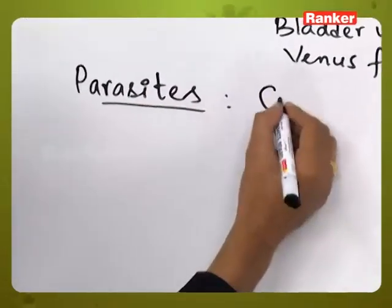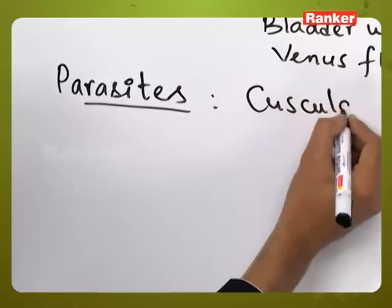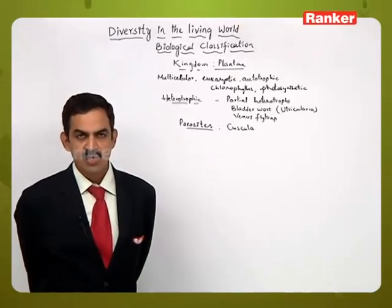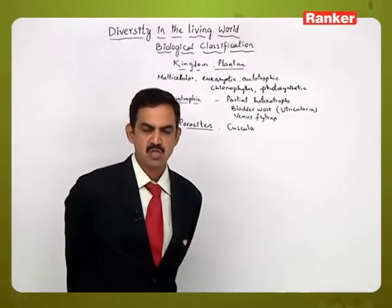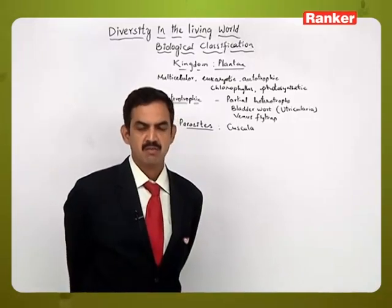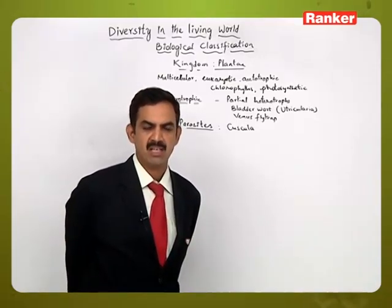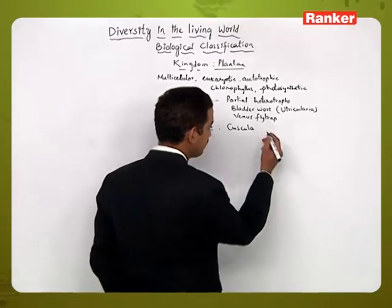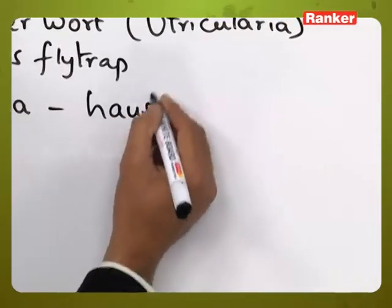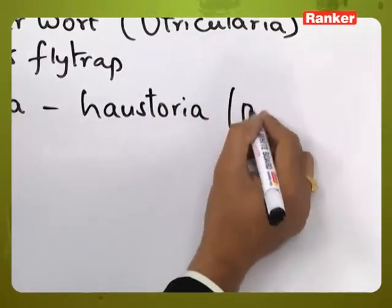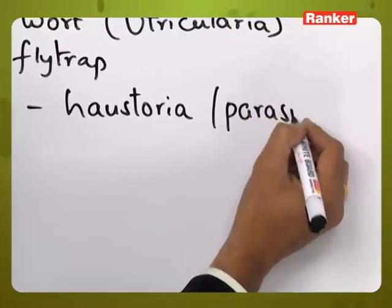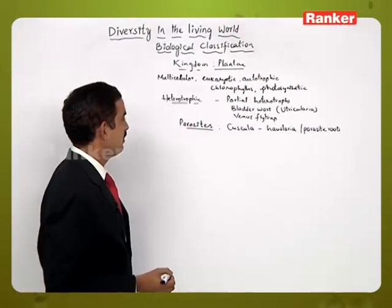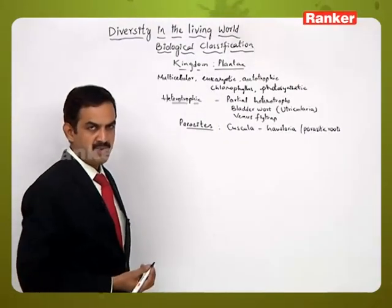There are some parasitic plants also, like Cuscuta. Cuscuta is an angiospermic plant which depends upon other angiospermic plants for nutrition. It acquires food and water from the host plant by producing special structures called haustoria. These are called parasitic roots.